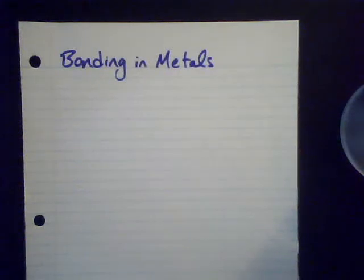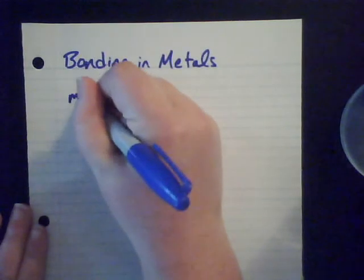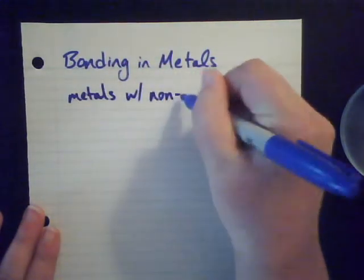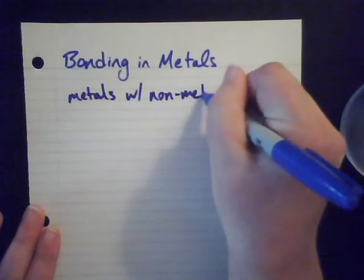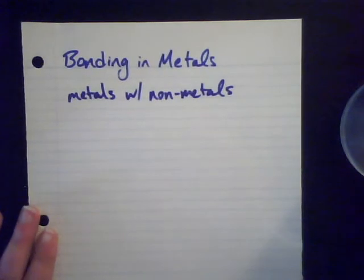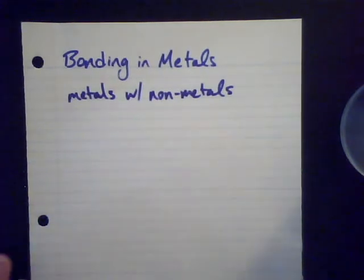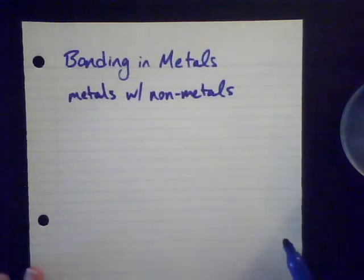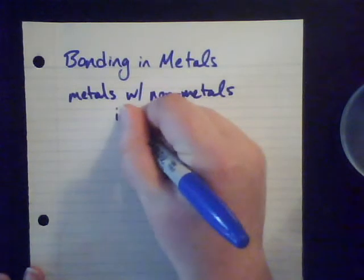I want to quickly talk about bonding in metals. So far we've talked about metals bonded with non-metals. This is why it's good to know your patterns in the periodic table, because if you know which side your metals are on and your non-metals are on, you'll be able to determine what type of bonding it is really quickly. If you have a bond between a metal and a non-metal, we call that an ionic bond.